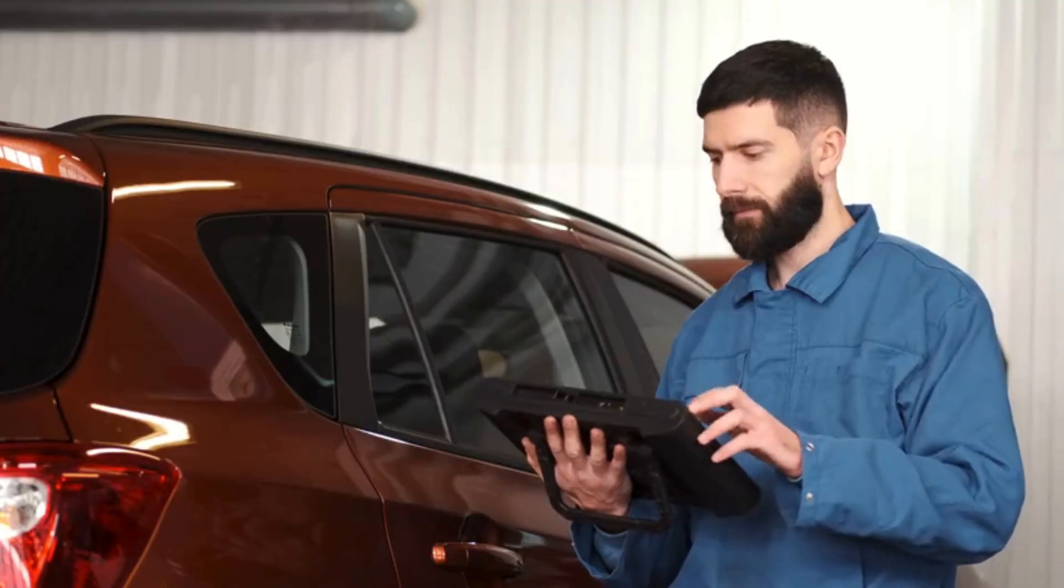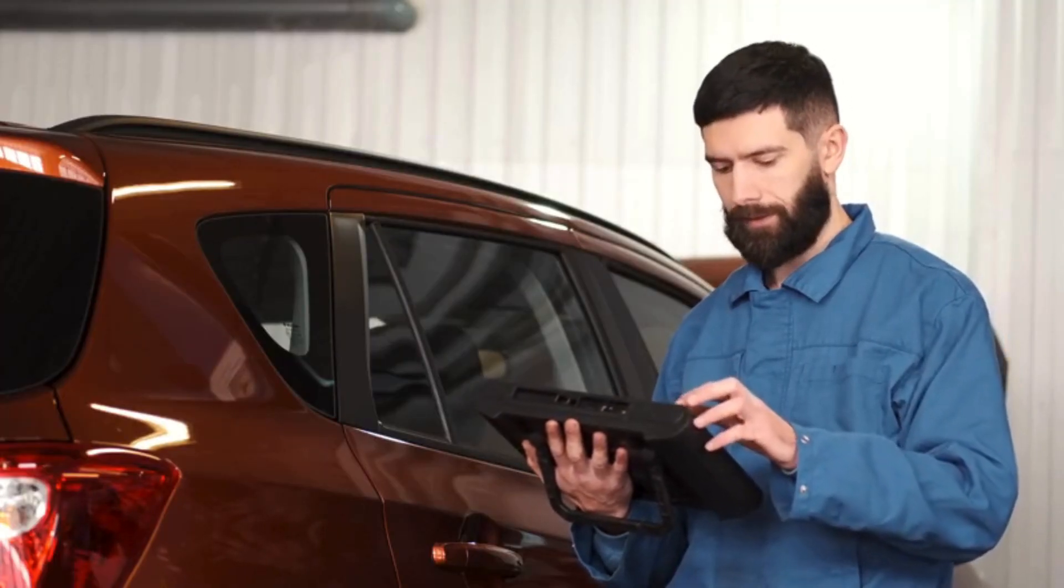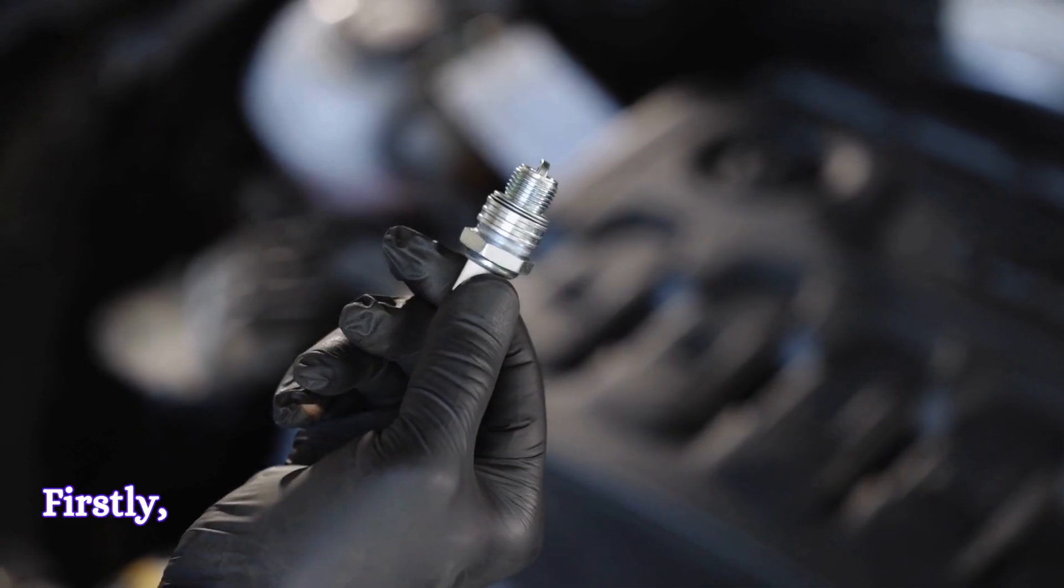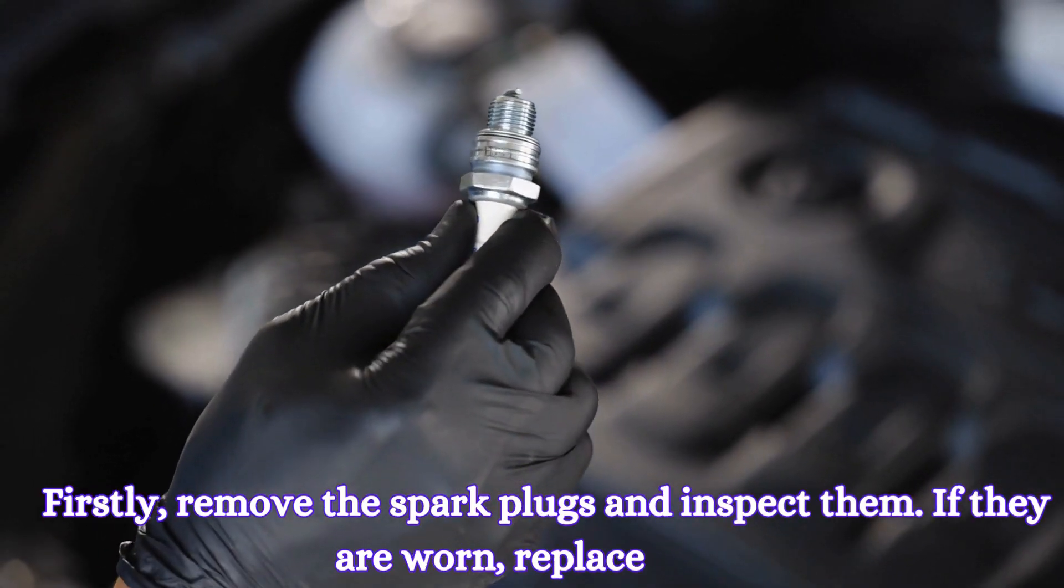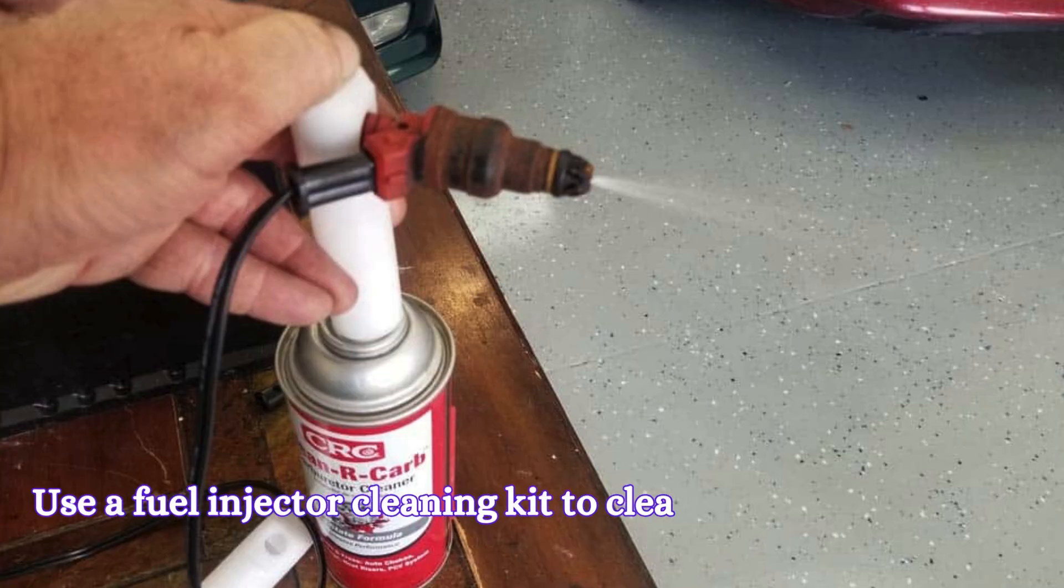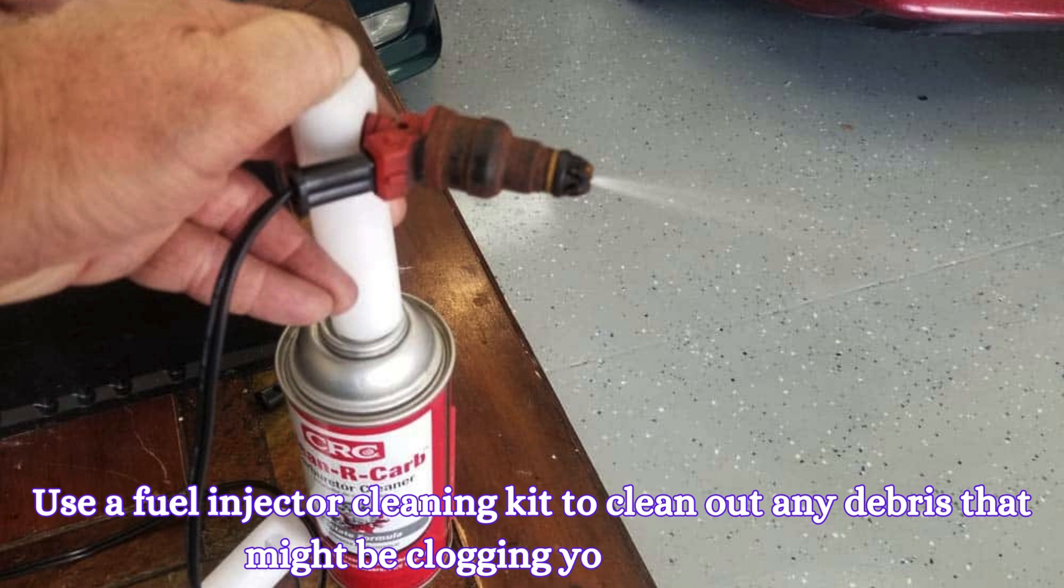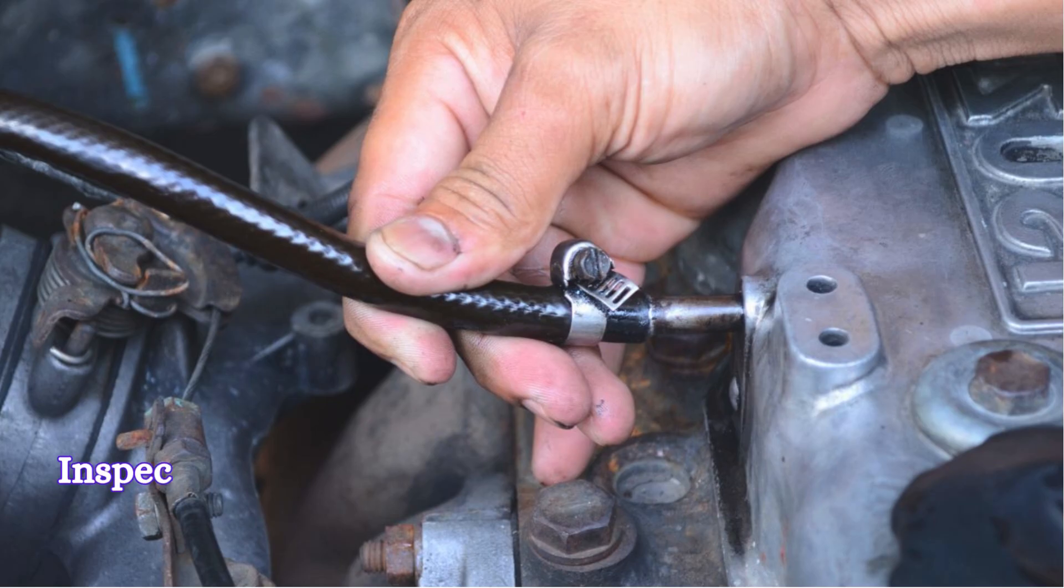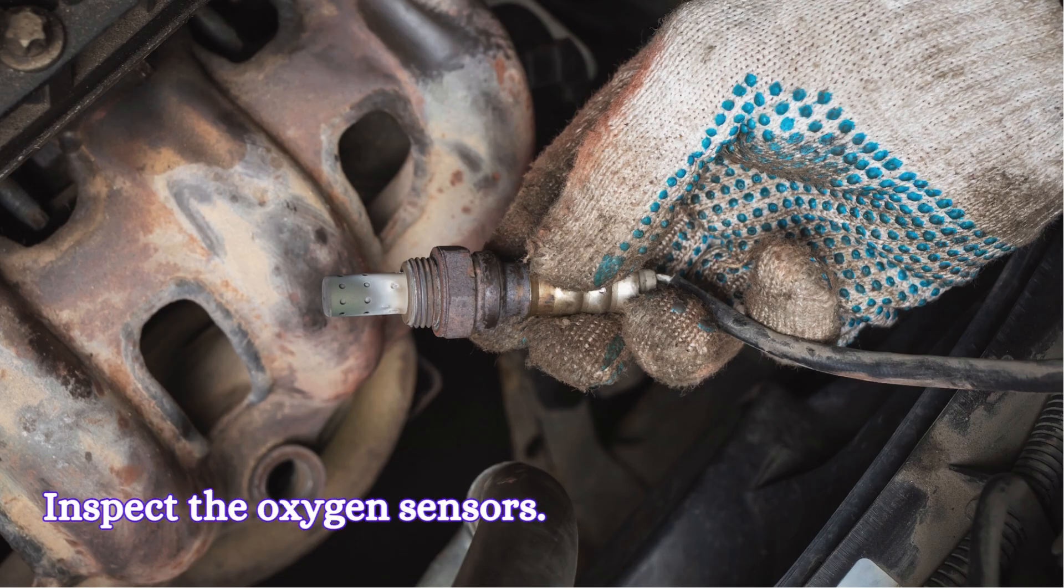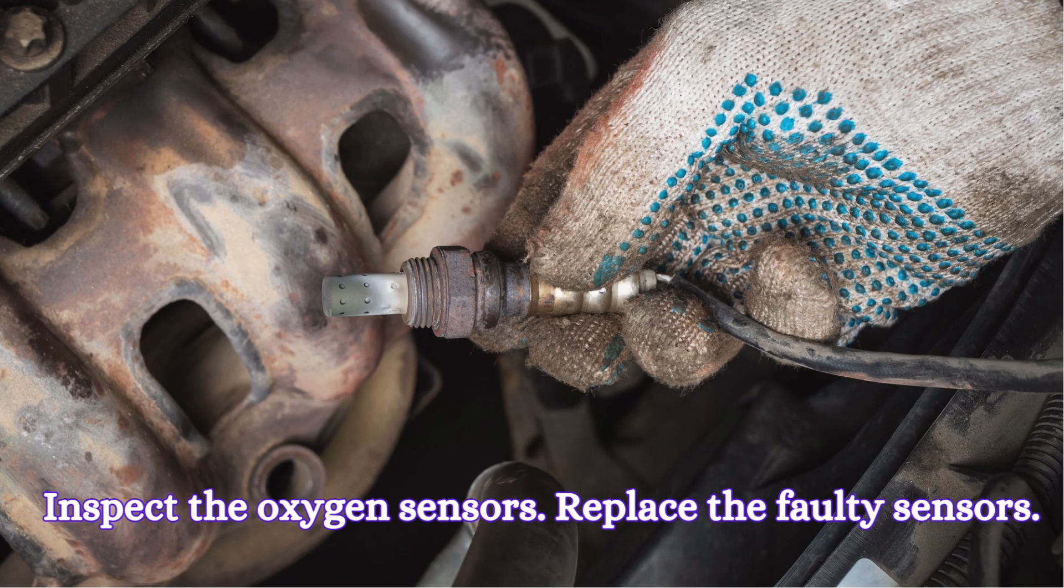Let's go over some DIY fixes you can try at home to solve the P0300 code. Remove the spark plugs and inspect them. If they are worn, replace them. Use a fuel injector cleaning kit to clean out any debris that might be clogging your injectors. Inspect the vacuum hoses for cracks or disconnections and replace any damaged hoses. Inspect the oxygen sensors and replace the faulty sensors.